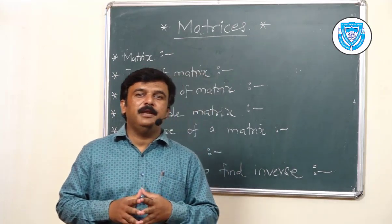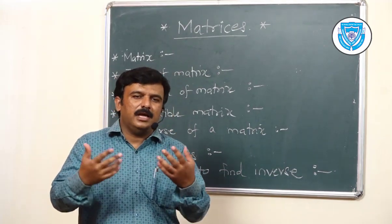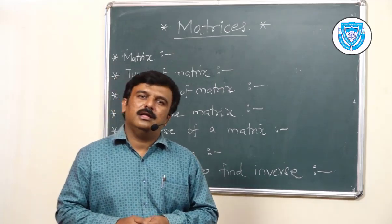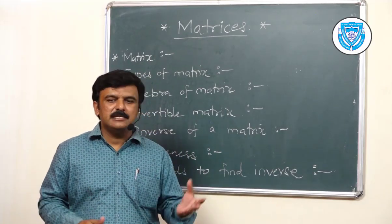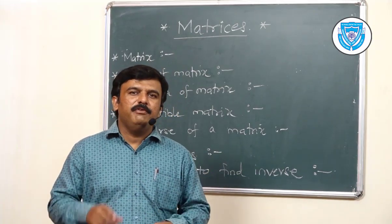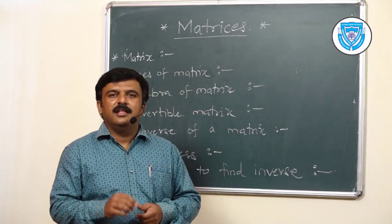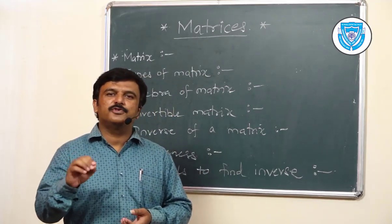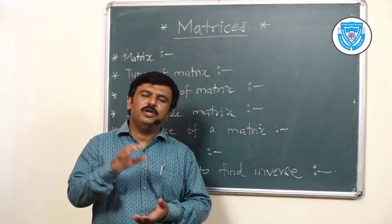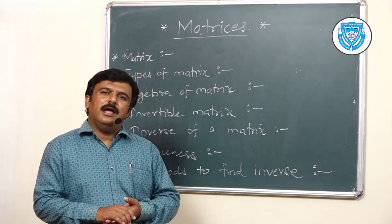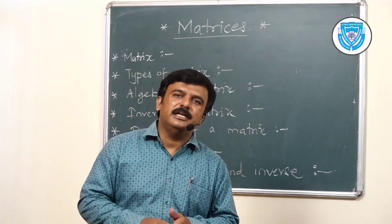Now let us talk about matrix multiplication. It is quite time-consuming and you need to be very careful performing this operation. We need to check one condition: the number of columns of the first matrix and the number of rows of the second matrix should be the same. Only then can we perform matrix multiplication. In matrix multiplication, the order is very important — the distinction between first and second matrix matters.